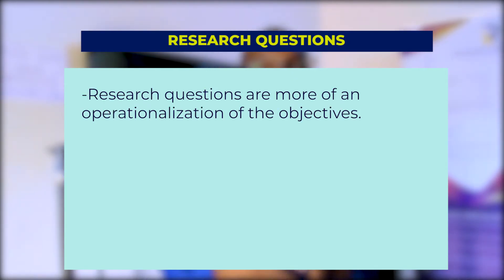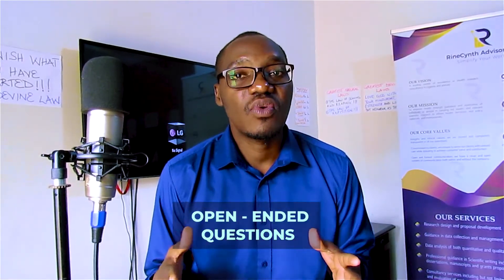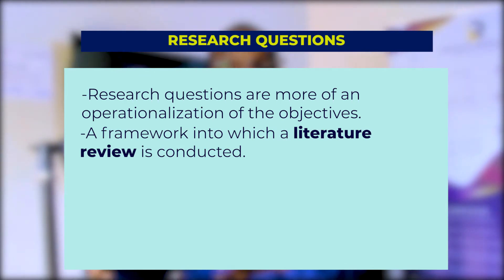Once you're done with objectives, you move to research questions. Research questions are an operationalization of the objectives — we begin analytic reasoning and generating answers to our research. We use open-ended questions like 'What is the relationship between salary and performance?' or 'What is the effect of fringe benefits on performance?' Research questions also serve as a framework for the literature review, where we try to answer them using existing literature and identify gaps our study will fill.